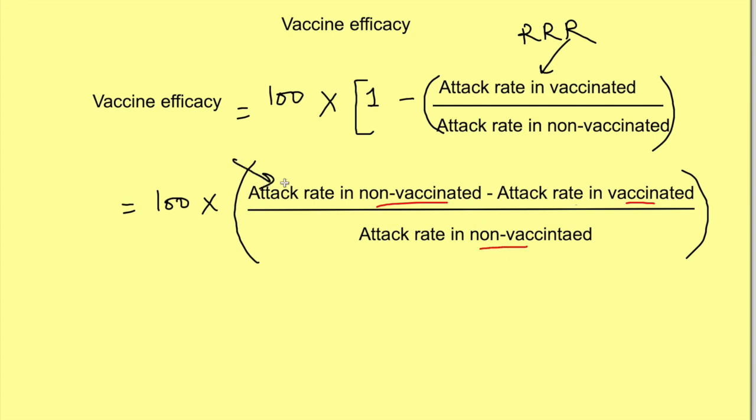In calculation it will come to 100 into 19 by 20, that is 5 into 19 equals 95 percent. That's how we calculate vaccine efficacy.